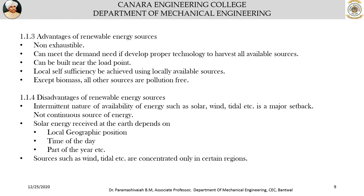On the other hand, disadvantages include the intermittent nature of availability. Solar, wind, tidal and other renewable sources are not uniform: number one, not uniform throughout the globe; number two, not uniform throughout the day; and number three, not uniform throughout the year.